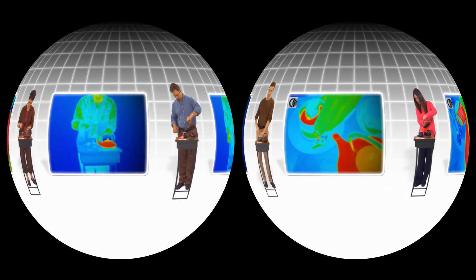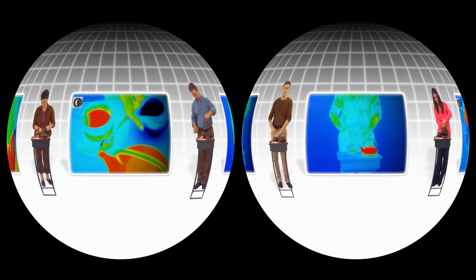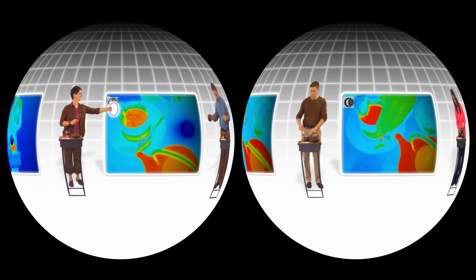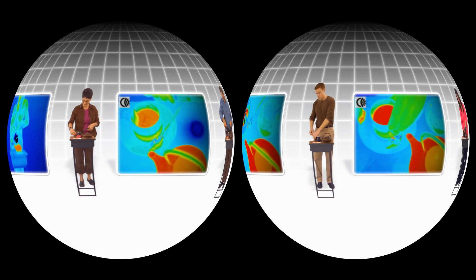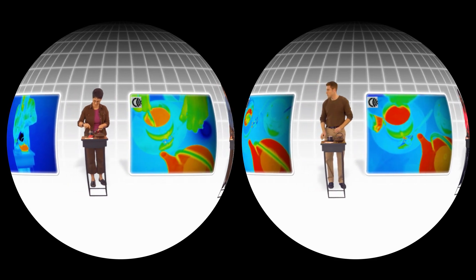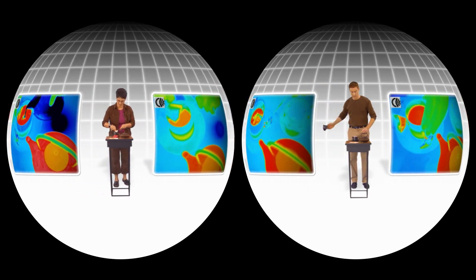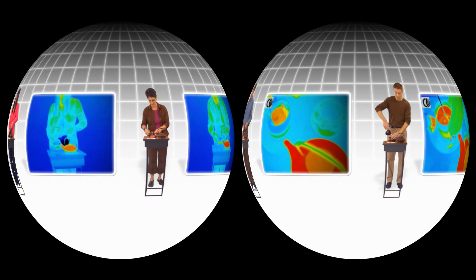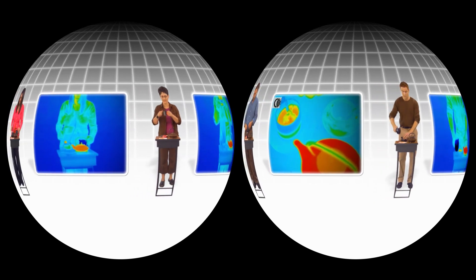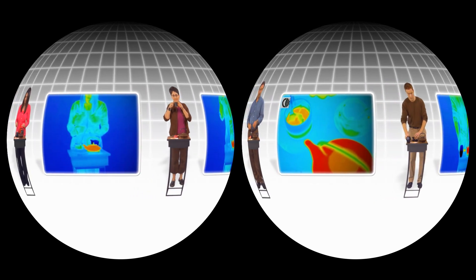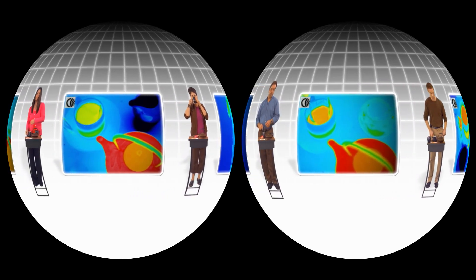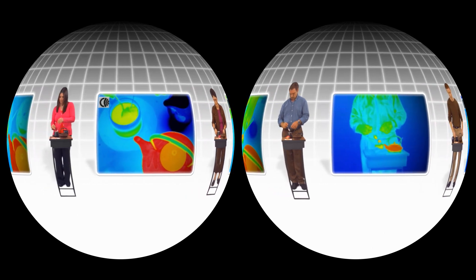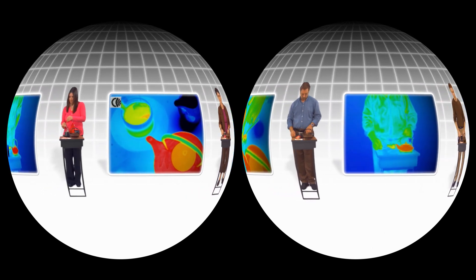Water, ice and vapor. Water exists as a liquid, solid or gas depending on temperature. One way to measure temperature is by looking at the infrared light it emits — light outside the range that's visible to the human eye.